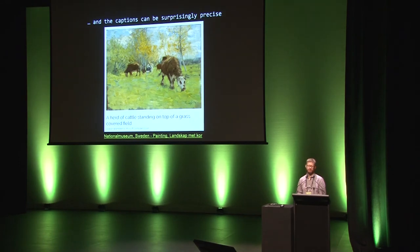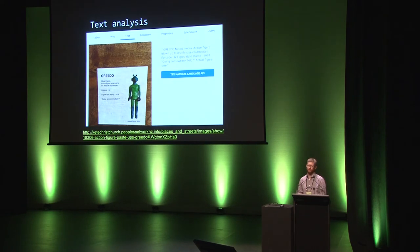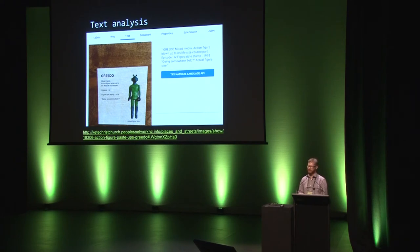Even the captions of artworks can be as good as what a cataloger might have manually entered in some cases. You can also use these tools to extract text that appears in the image. In this case, the same uploading tool managed to correctly pick out all of the text. A great example of this is the Papers Past website, which uses text analysis of photographs and scanned documents to provide increased searchability.